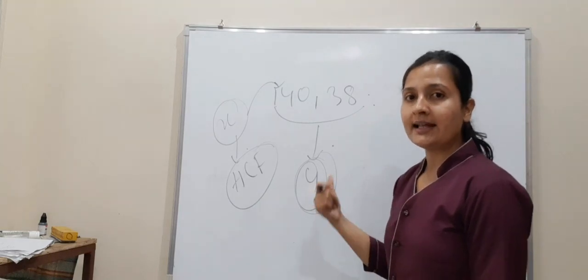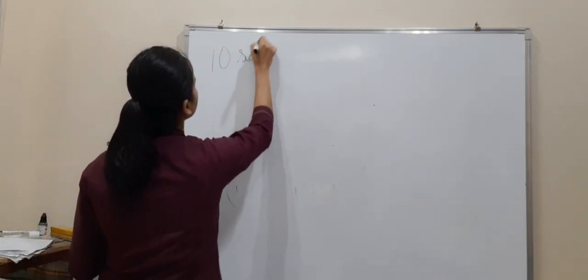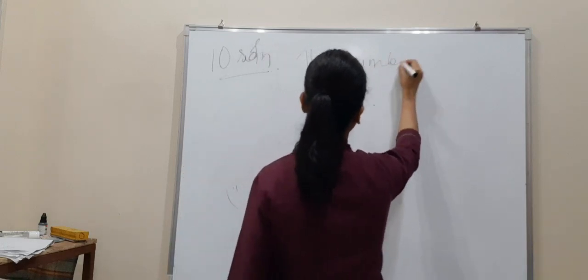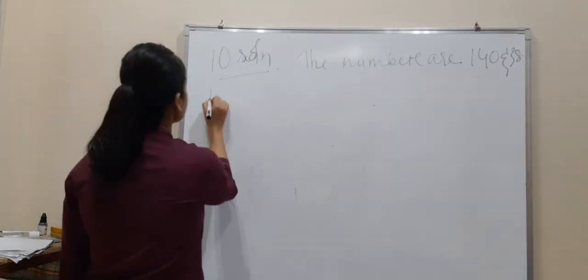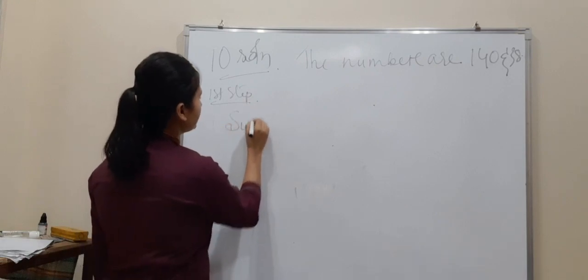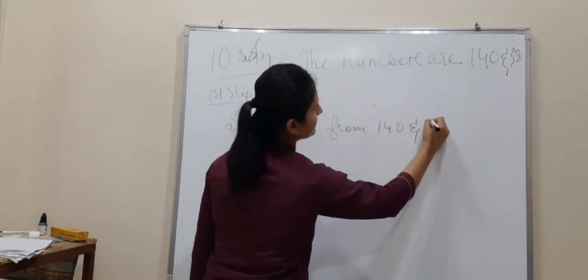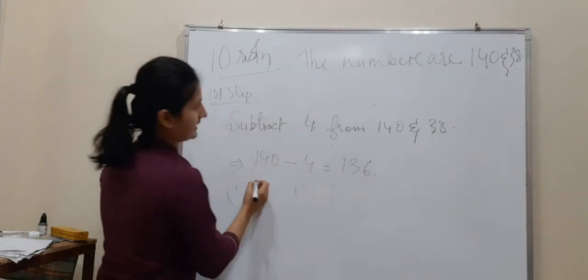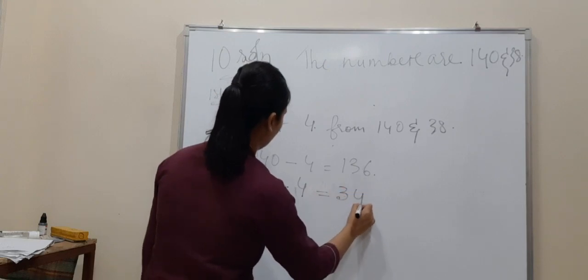I hope you have understood the question. Let's try to solve it. So the given numbers are 140 and 38. In the first step, what do you have to do? We have to subtract 4 from 140 and 38. So how much we will get? 140 minus 4 is 136, and 38 minus 4 will be 34.